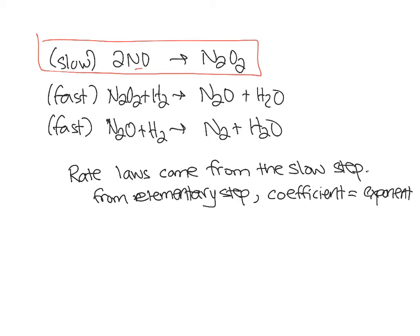And so for this rate law, I start with the slow step, which appears to be step one. And I use the reactants. I notice the reactants are NO. And so I would say that rate equals K times NO. And because this is an elementary step, I get to turn that coefficient of 2 into an exponent of 2. So apparently, according to this mechanism, I would expect that the rate law is second order with respect to nitrogen monoxide.